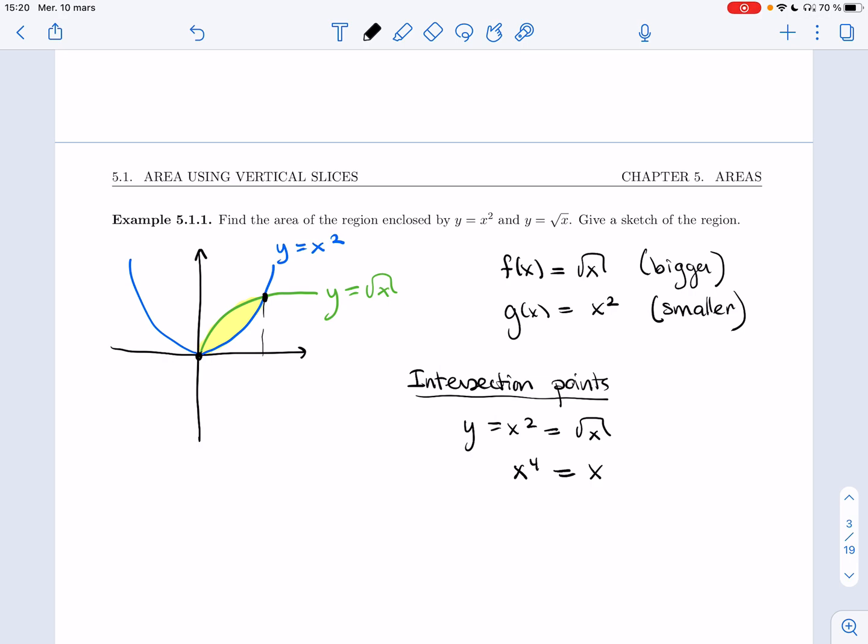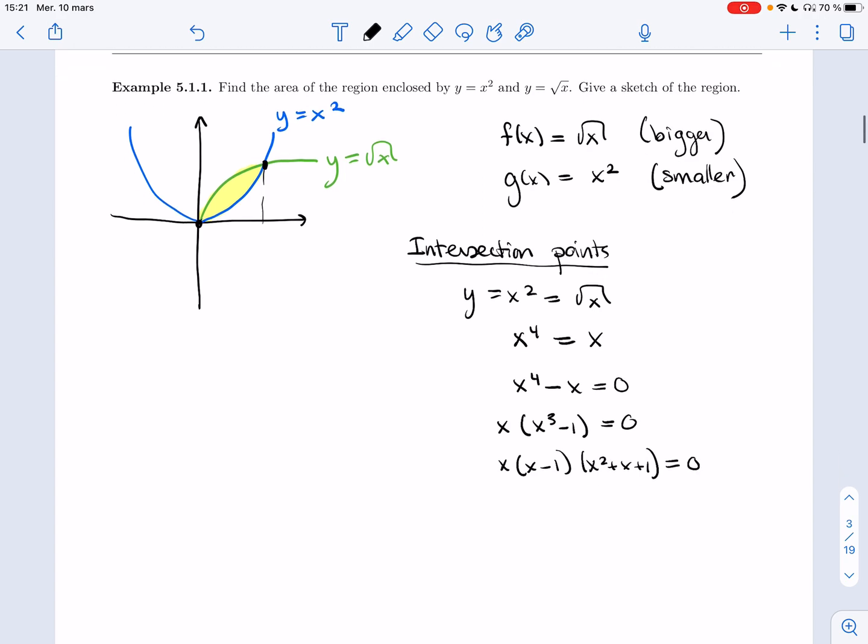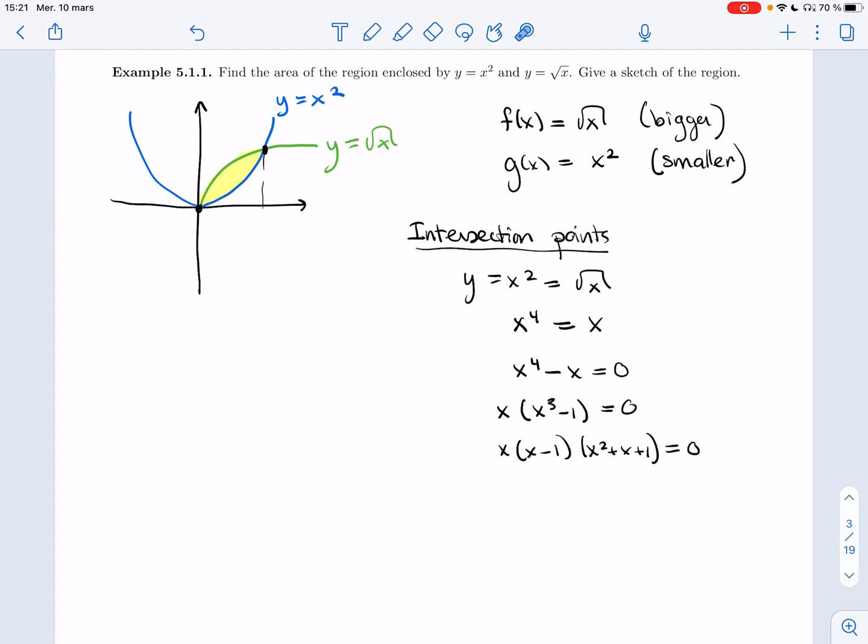I'm going to get x to the four, x to the four is equal to x. And now I'm going to set it all to one side. And I'm going to start factoring. I get x cubed minus one. And then if you remember how to factor this, it's a difference of cubes. And so you get something like that. This has no zero.